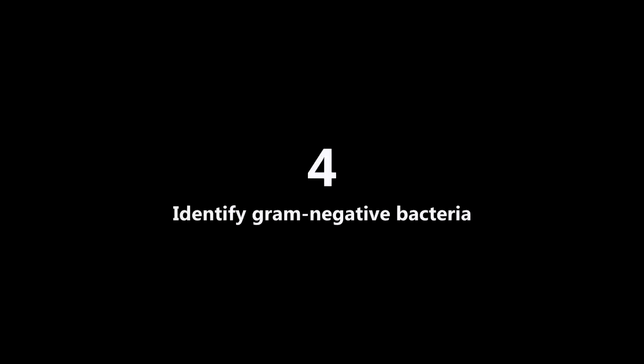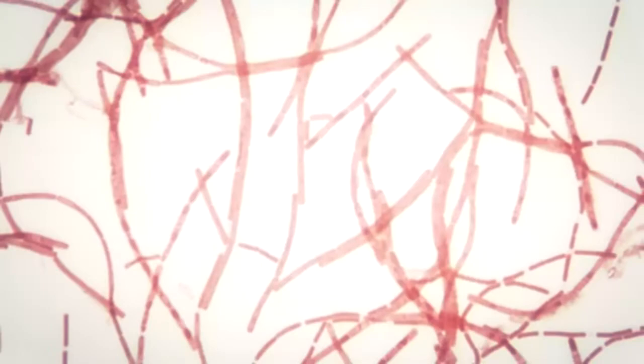Step three, part four — identify gram-negative bacteria. Gram-negative bacteria show a pink stain. Bacteria are often classified into three groups: cocci are spherical bacteria, rods are long thin bacteria, and coccobacilli are somewhere in between. Gram-negative cocci are most commonly Neisseria spp. Gram-negative rods include E. coli, Enterobacter, Klebsiella, Citrobacter, and many others. Vibrio cholerae can appear as ordinary rods or curved rods. Finally, gram-negative coccobacilli.